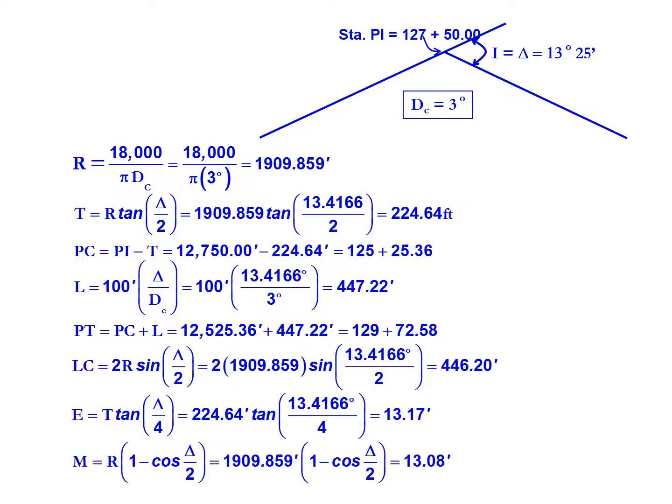Our middle ordinate can also be calculated: the radius 1909.859 feet multiplied by 1 minus the cosine of delta divided by 2 will give us a middle ordinate of 13.08 feet.